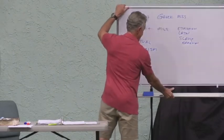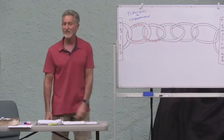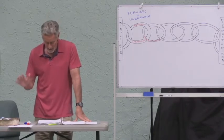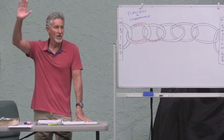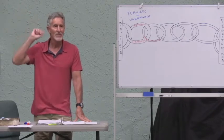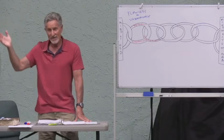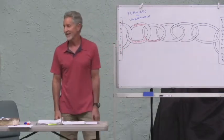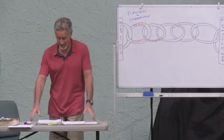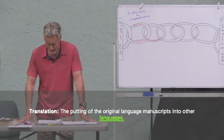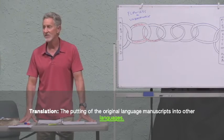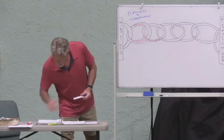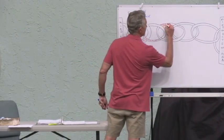Back to our chain — this is the link of transmission: the process of copying the original manuscripts. But most of us don't read Hebrew or Greek, so we need the next link: translation. Translation is the putting of the original language manuscripts into other languages — in our case, English. I was told by a class member that there are now over 800 English translations of the Bible.